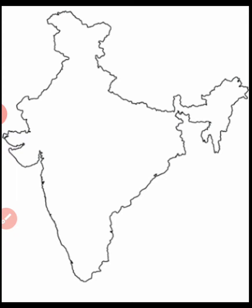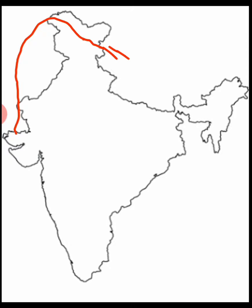The first river we will talk about is Indus. Indus river starts from China, passes near Jammu Kashmir, then through Pakistan, and flows like this. That is your Indus river. It starts in China, comes out near Jammu Kashmir, passes Pakistan and Gujarat, and flows into the Arabian Sea.